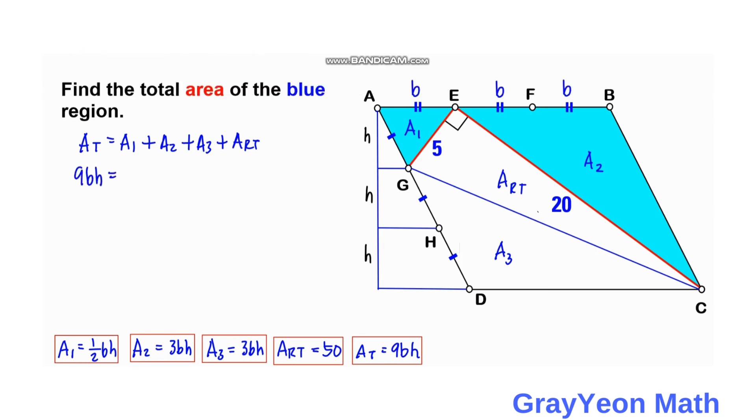So 9bh is equal to area 1 which is 1 half bh plus area 2 which is 3bh plus area 3 which is 3bh also plus area RT which is equal to 50.